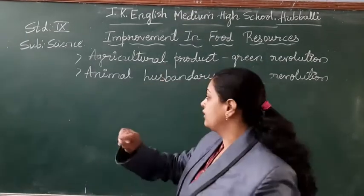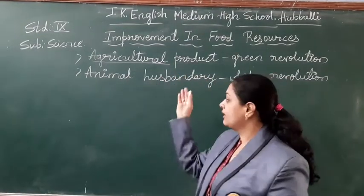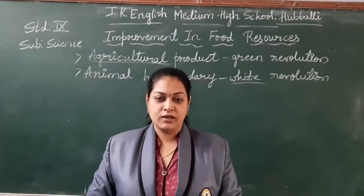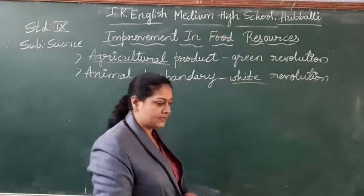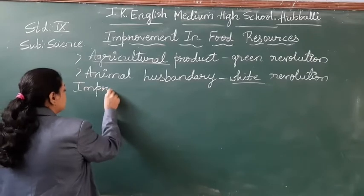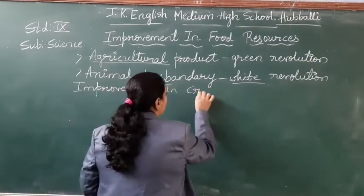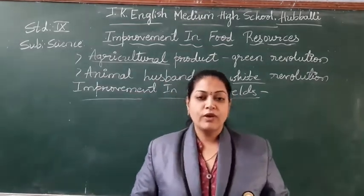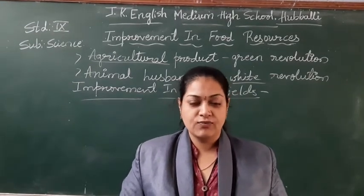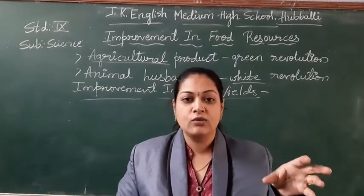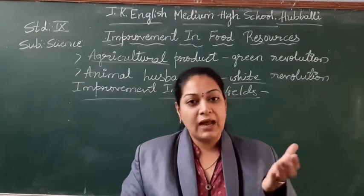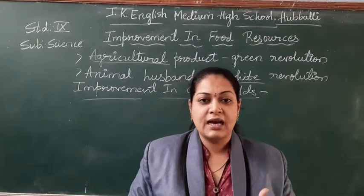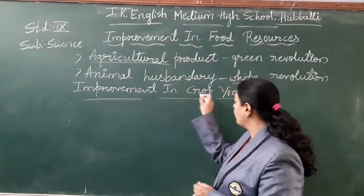Let me begin with the first part — agriculture. Our main intention is to improve the crop yields. What is improvement in crop yields? We want to improve the quality and quantity of the crops. We can do this by selecting proper quality seeds. They should be disease resistant, adjust to all climatic conditions, and be free from infections. These are all the desired qualities we want to improve in the crop yields.